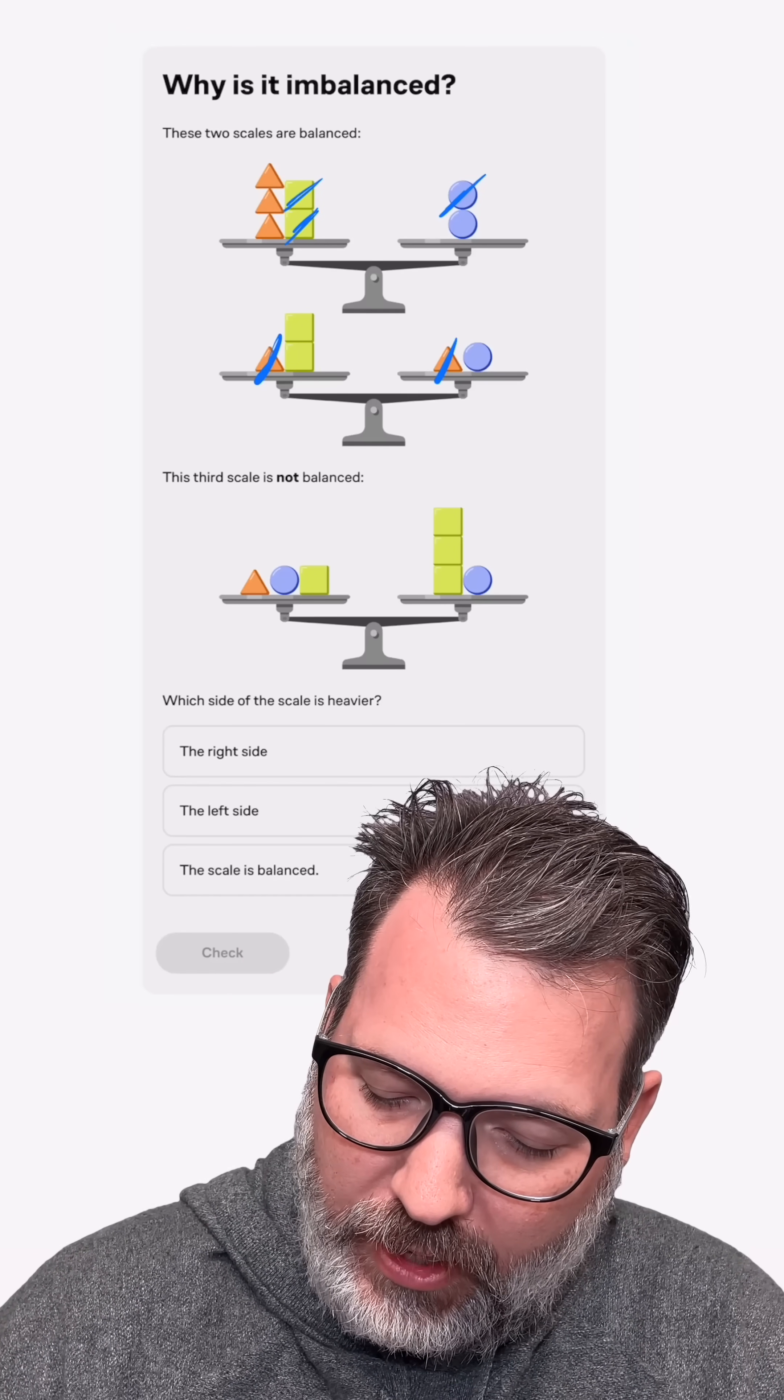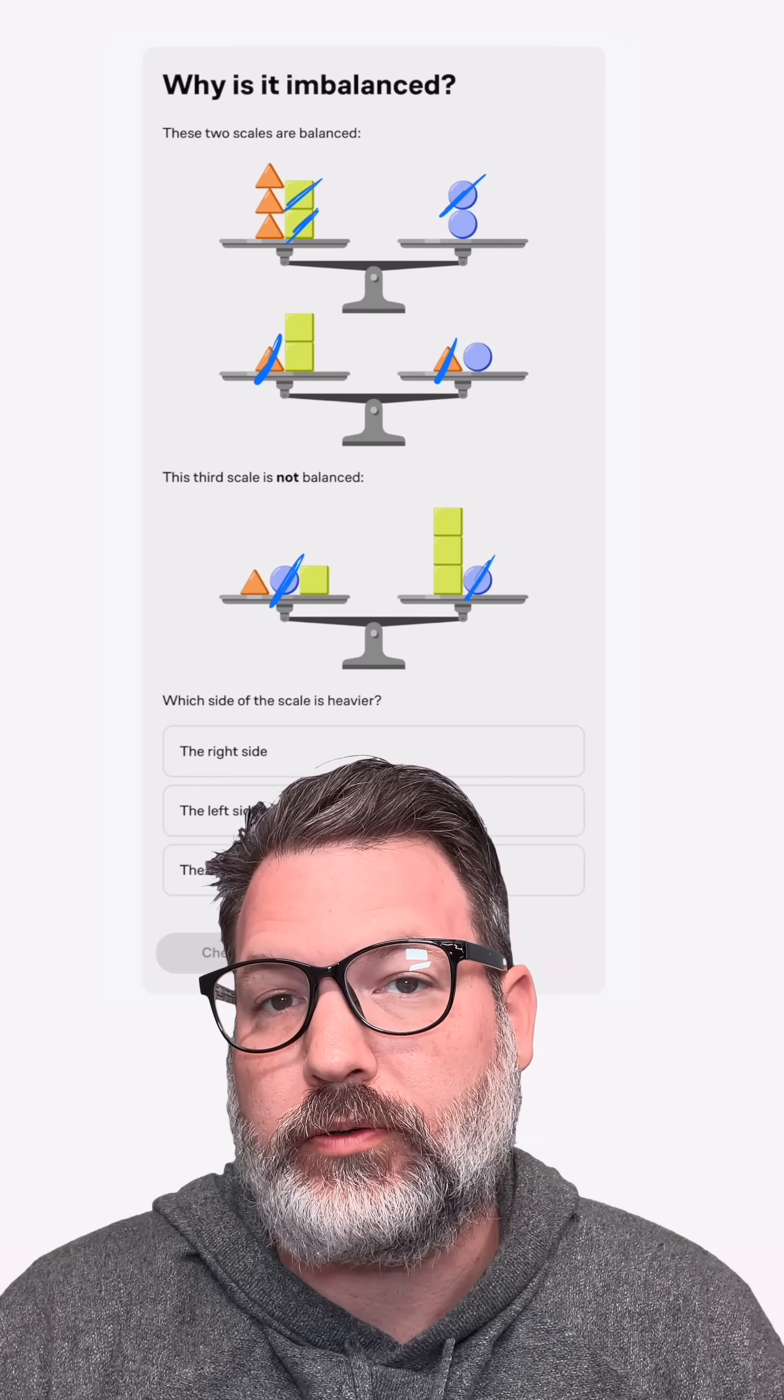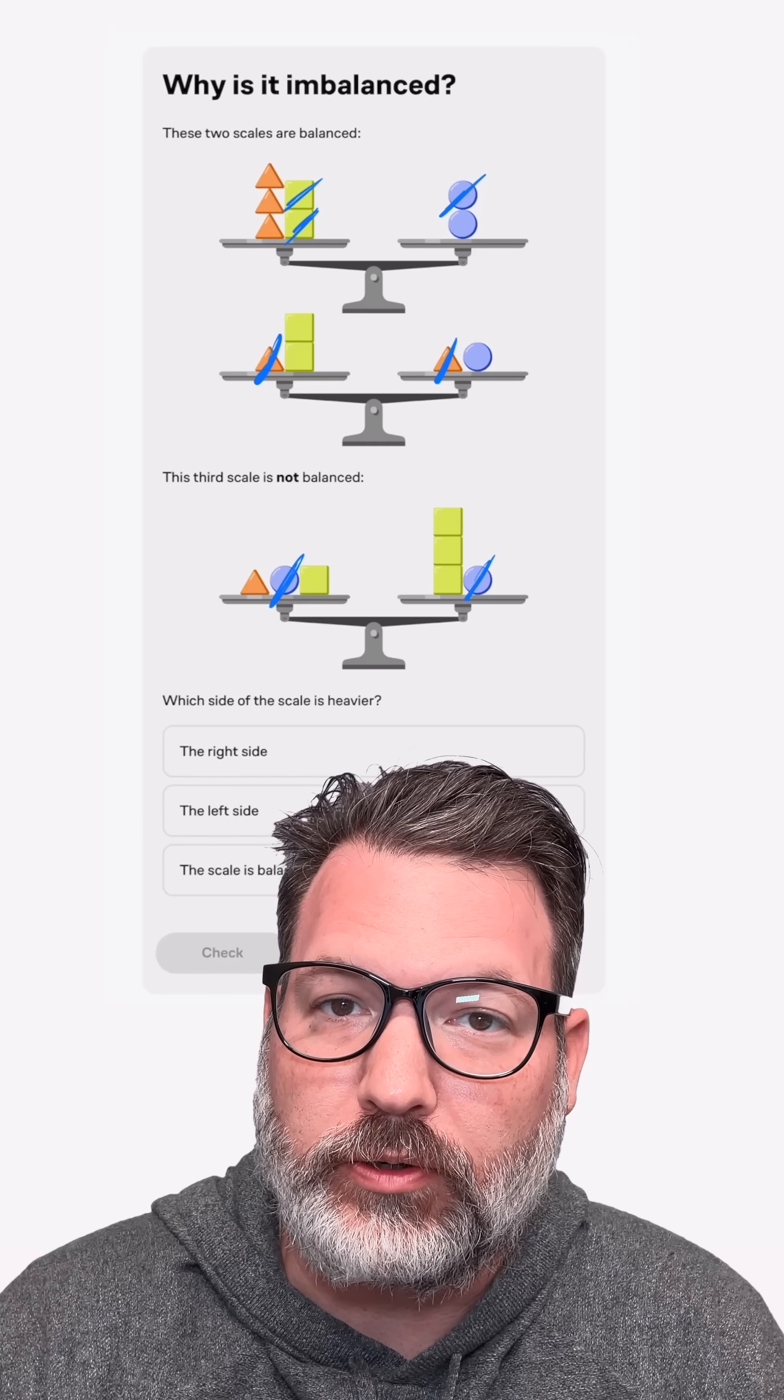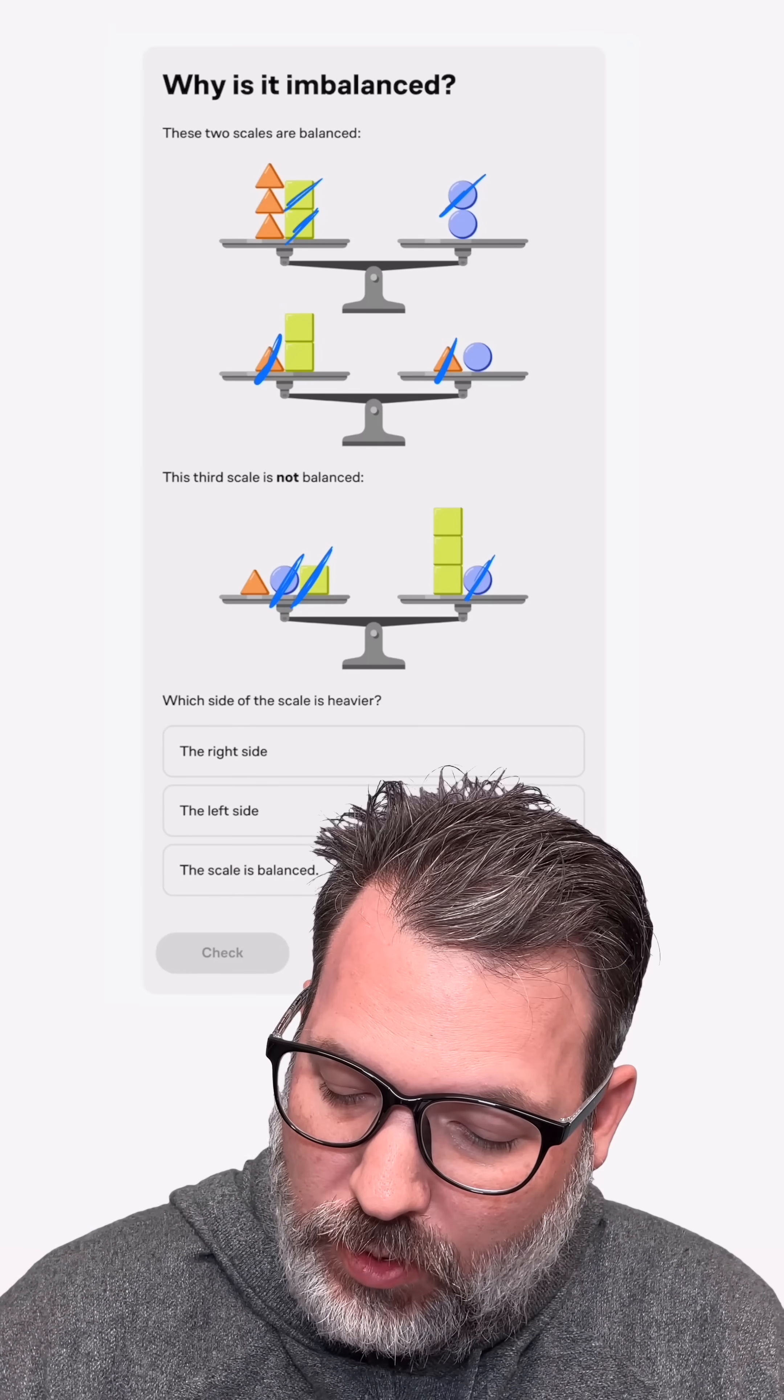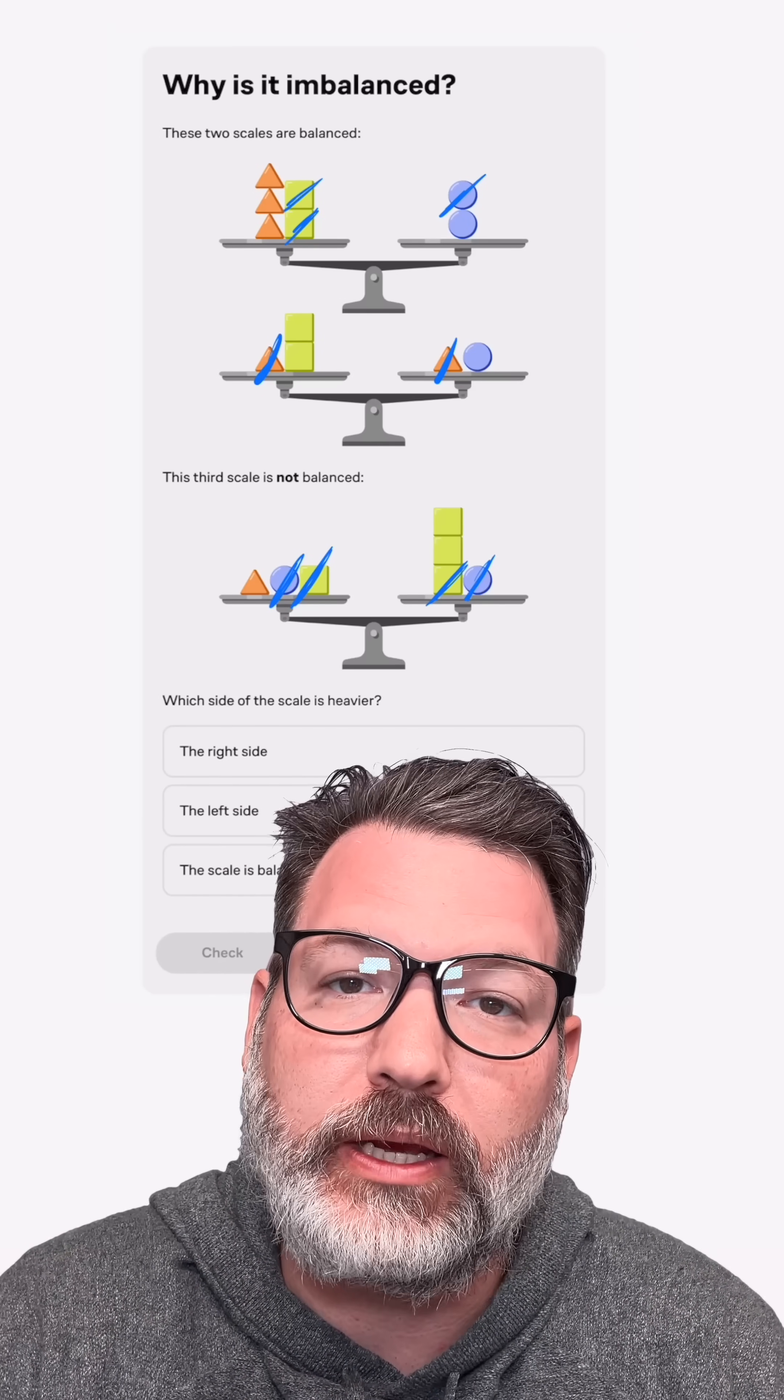So what does that tell me for this third scale? Well, first of all, clearly the circle is balancing with a circle, so I'm going to ignore those two circles. And just as clearly, a square balances with one of those three squares on the right, so I'm going to ignore those also.